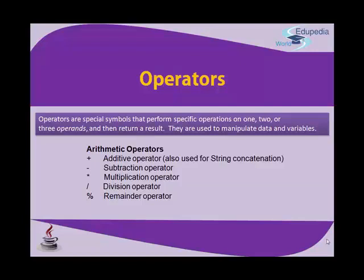The first type is arithmetic operators. The plus sign is the additive operator, also used for string concatenation. Then you have the subtraction operator, multiplication operator, and division operator. In mathematics you use a horizontal line for division, but in computer programming you use a forward slash. The remainder operator is mod, represented by the percentage sign.